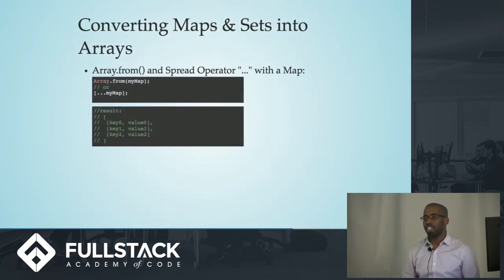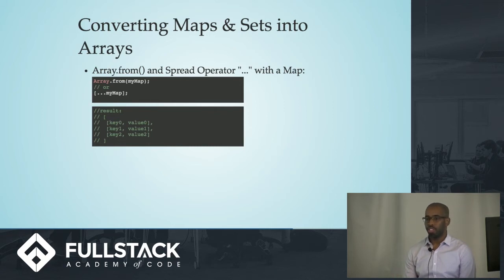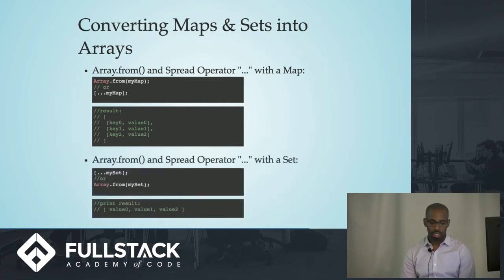If you find out that you actually did need an array, you can easily convert sets and maps into arrays. You can use the Array.from method to convert any map, set, or string into an array — a map will become a multi-dimensional array, and a set will become a normal array. You can also use the spread operator with maps and sets, and it will do the same thing.